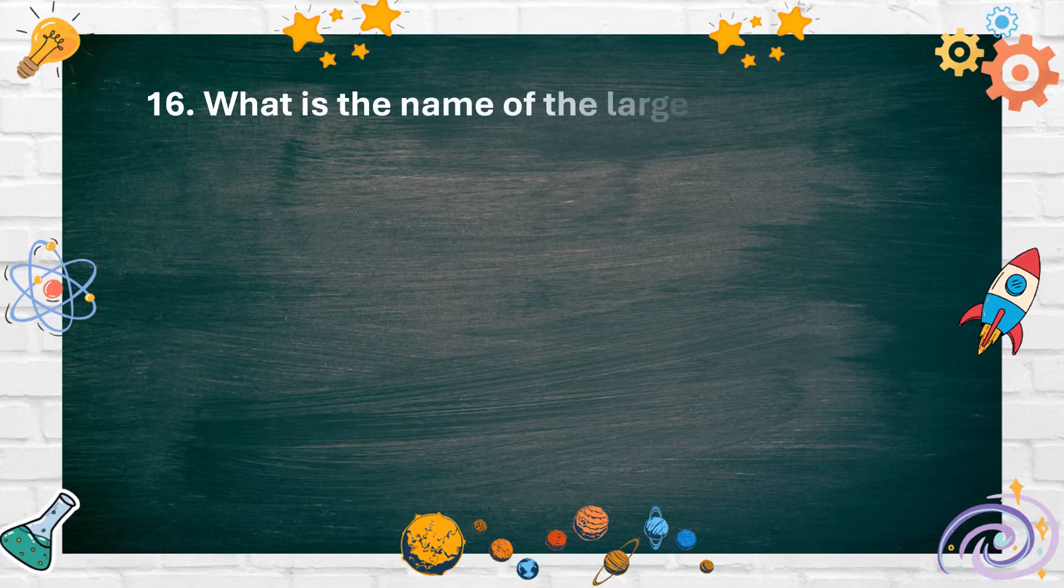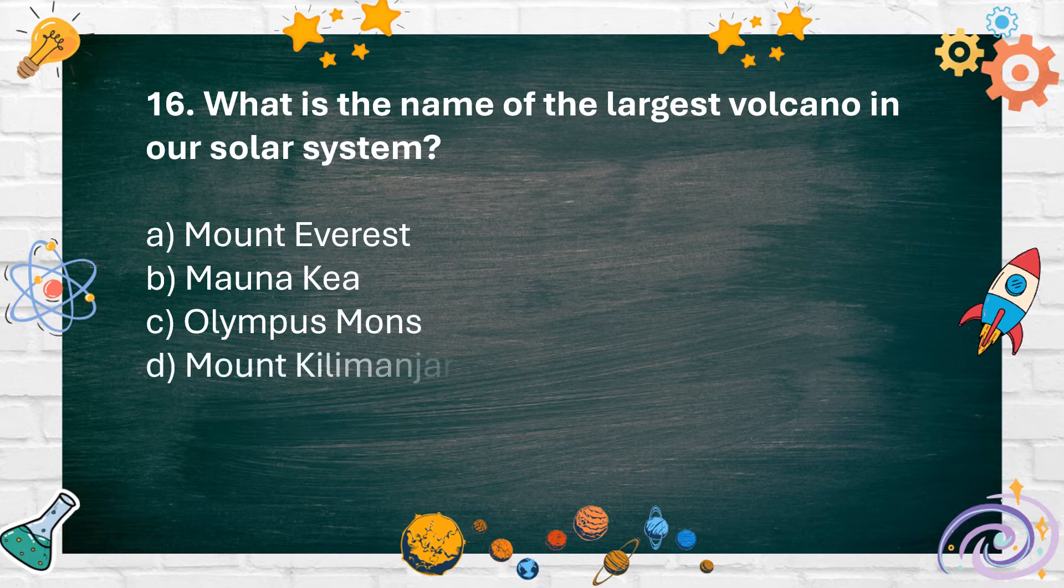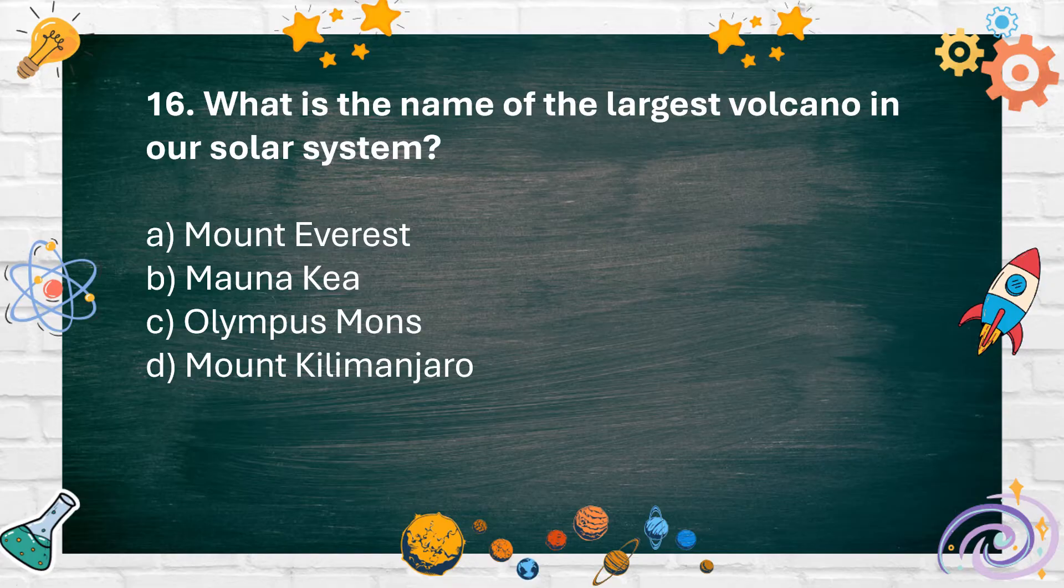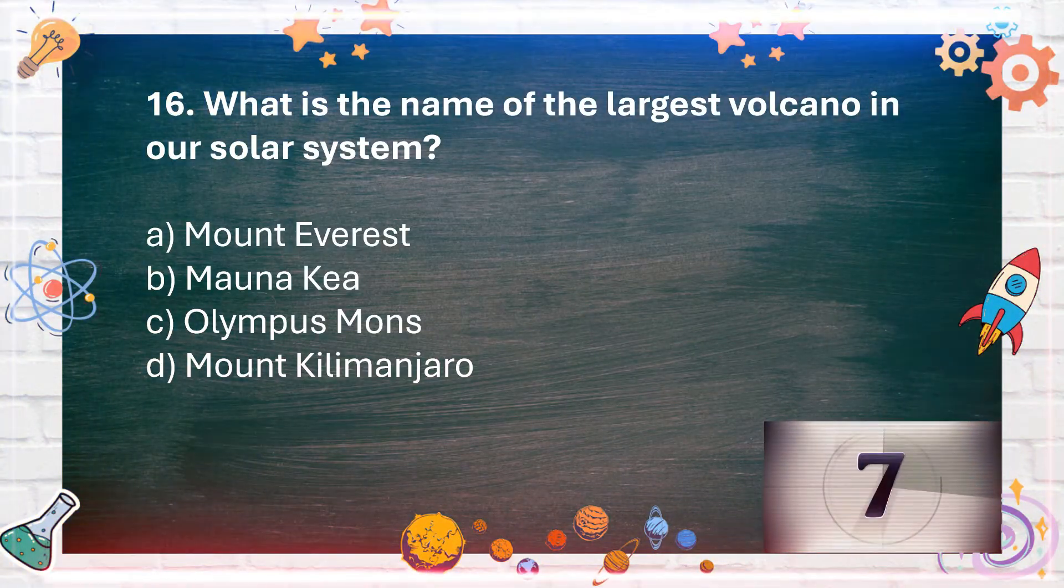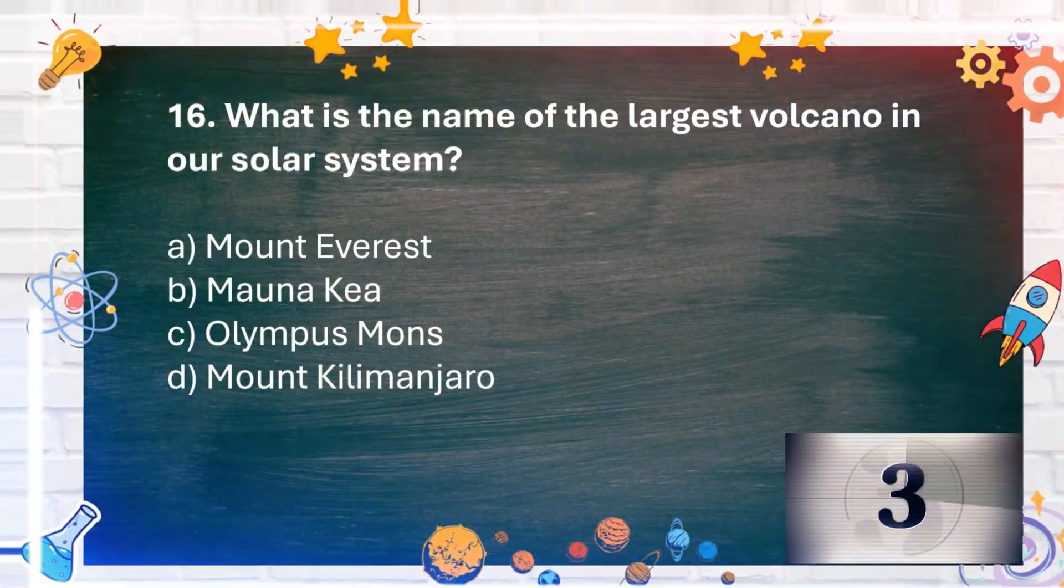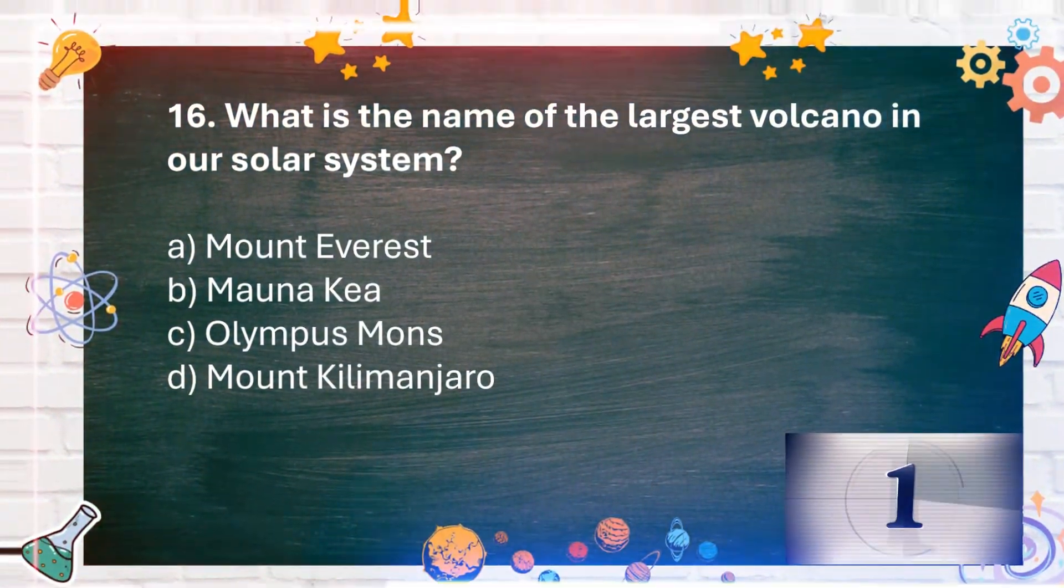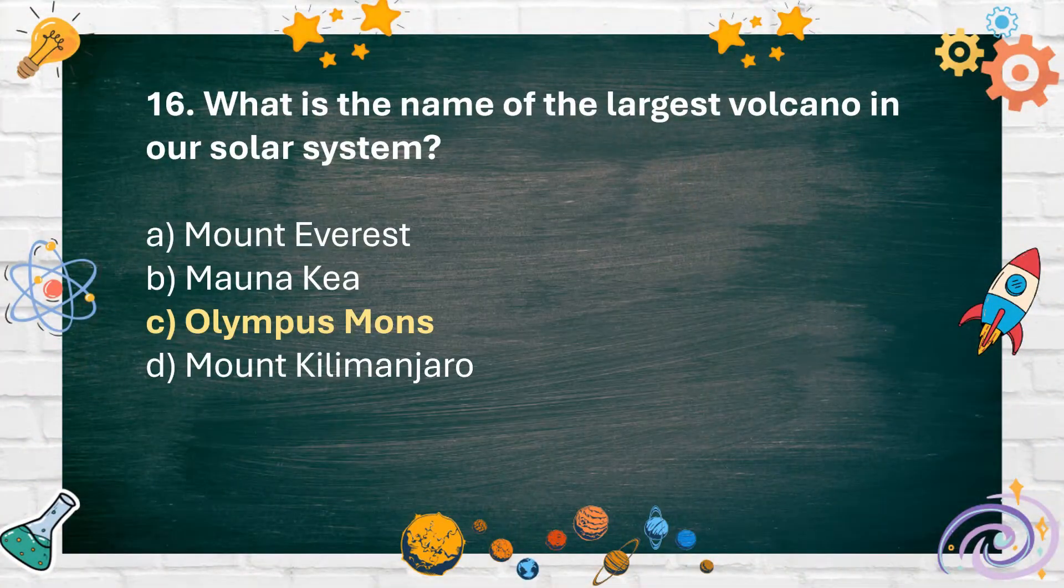Number 16: What is the name of the largest volcano in our solar system? A. Mount Everest, B. Mauna Kea, C. Olympus Mons, D. Mount Kilimanjaro. The answer is C. Olympus Mons.